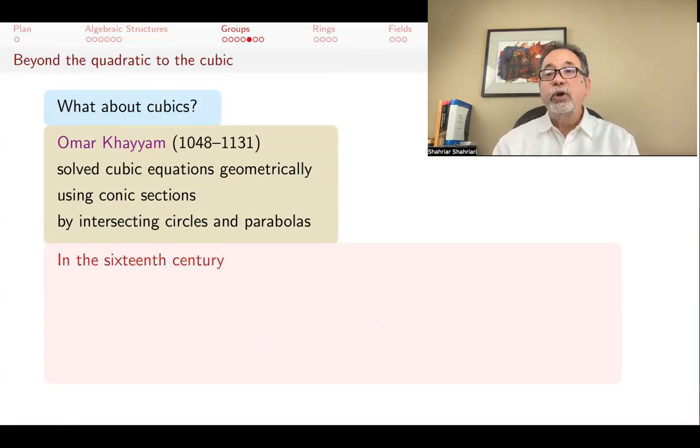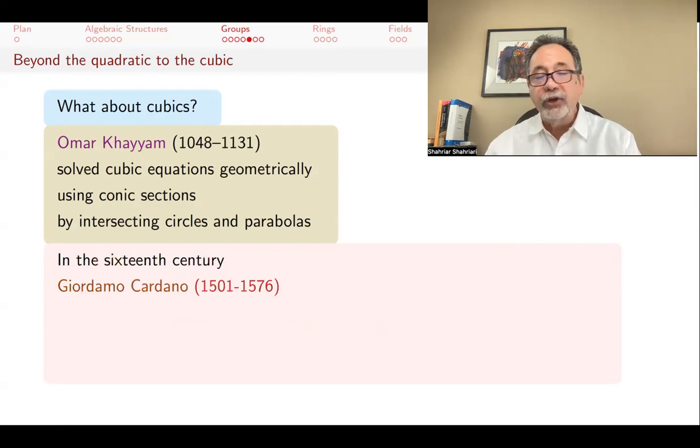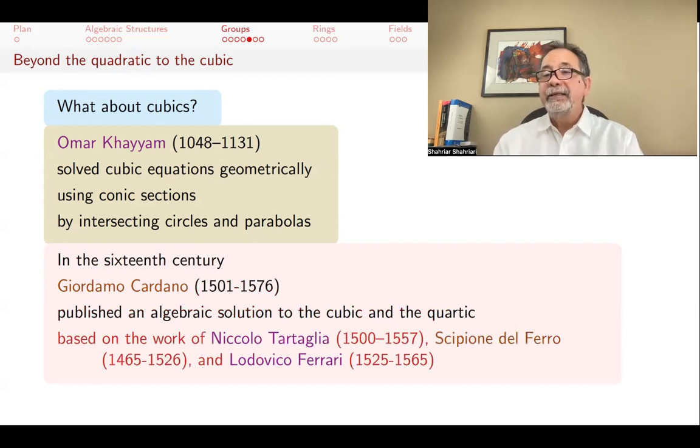Cubic and quartic equations, quartics are fourth degree equations, were not solved algebraically until the 16th century in the Italian city-states. Cardano was the first to publish this solution, not his own work, but based on the work of Tartaglia, Ferro, and Ferrari.